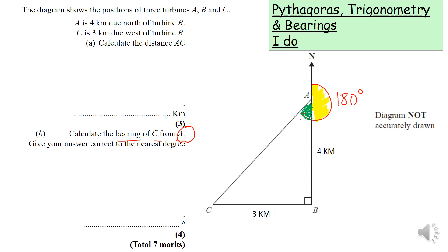Same again, we know we have a right-angle triangle. We've got two lengths and we need to find an angle. Those are our hints that it's a trigonometry question.